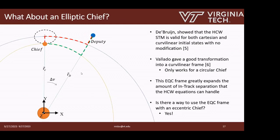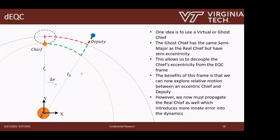We've done it for the circular chief — but in real life orbits aren't always circular; there's always some eccentricity. Can we use this EQC frame with an elliptical chief? The answer is yes, and it's probably my favorite part of this research. We're going to add in a virtual or ghost chief: we create a ghost orbit that has the same semi-major axis as the chief but has zero eccentricity. If our chief's orbit has some eccentricity, we create a circular orbit with the same semi-major axis, and then use the EQC frame of this ghost orbit. All of our relative motion is now between this ghost chief — a fictitious point that doesn't really exist — and the real chief and deputy.